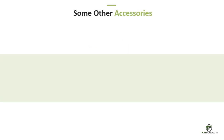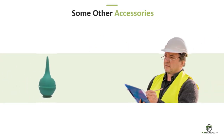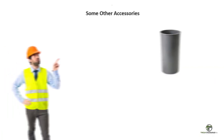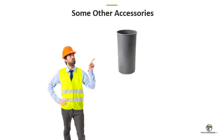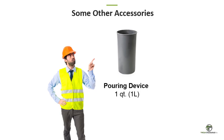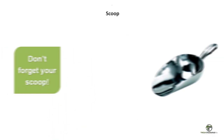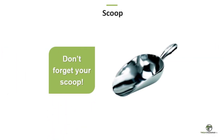We'll need a syringe with a capacity of at least two ounces or 50 milliliters. A pouring device with a capacity of at least one quart or one liter — a field favorite is the 6×12 plastic cylinder mold. And, of course, we'll need a scoop.